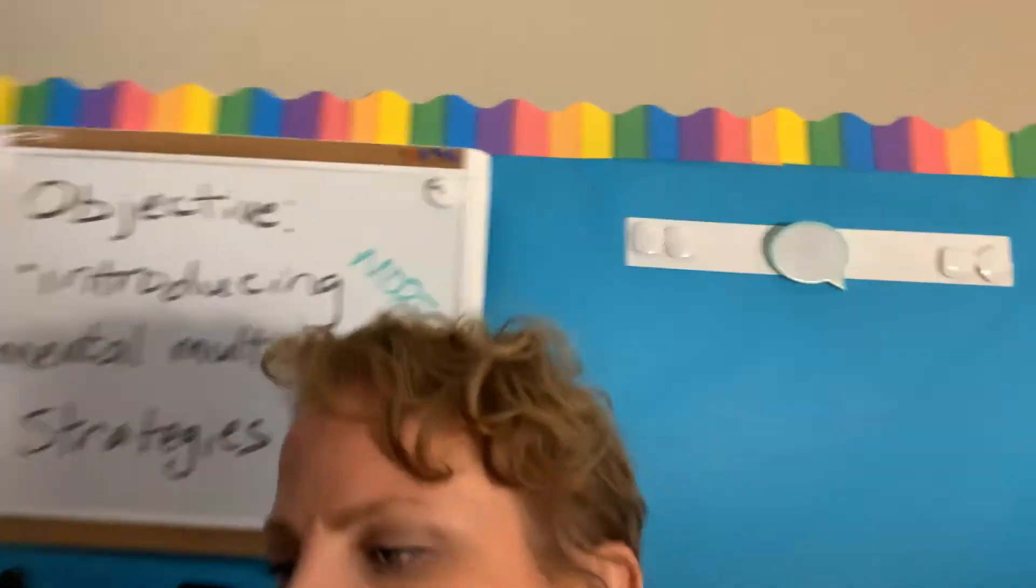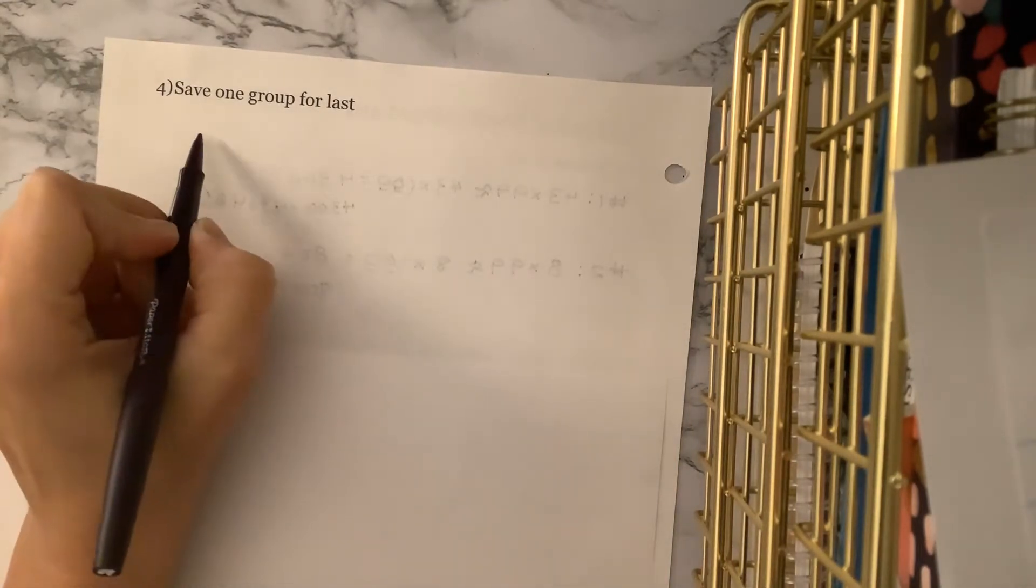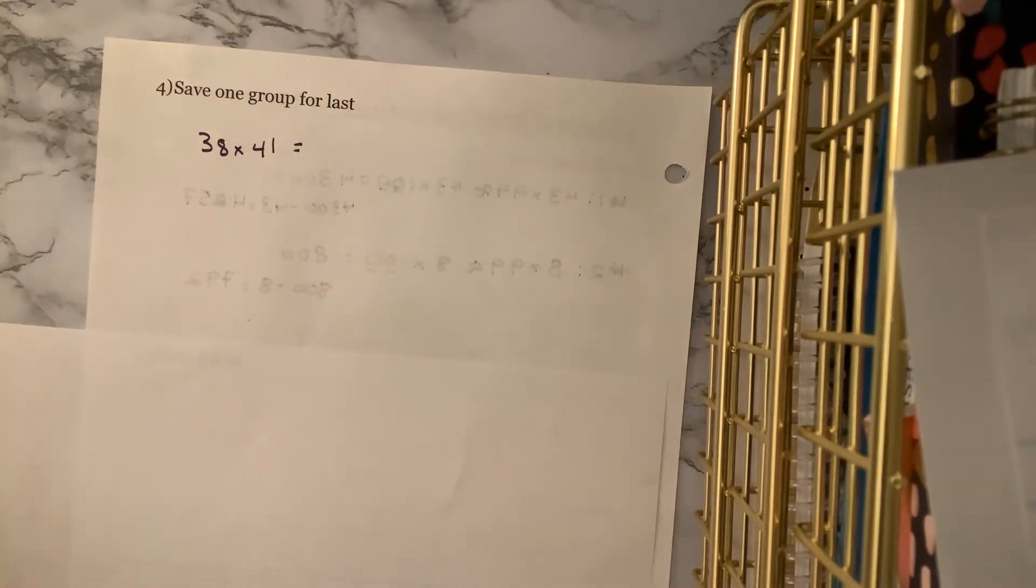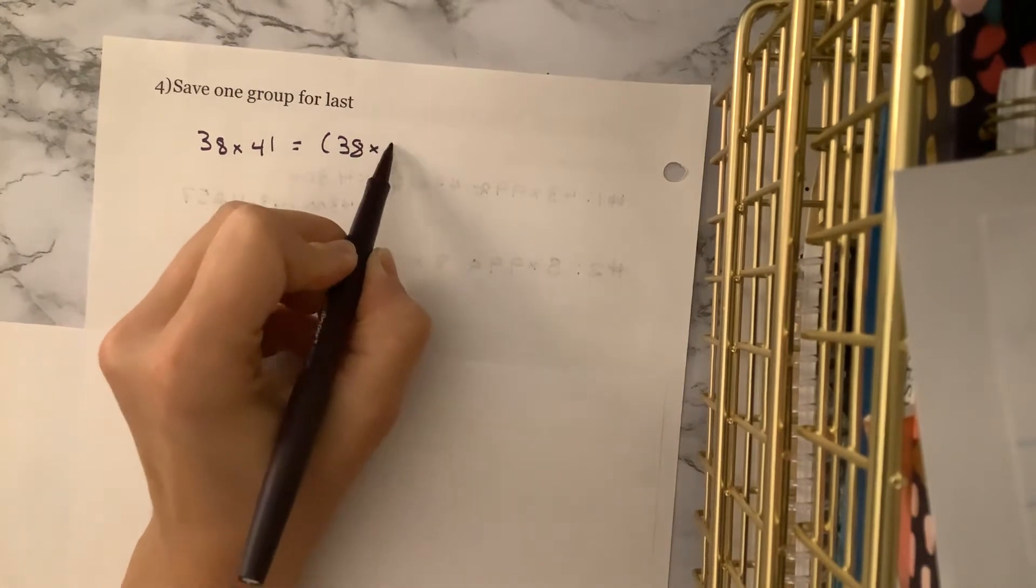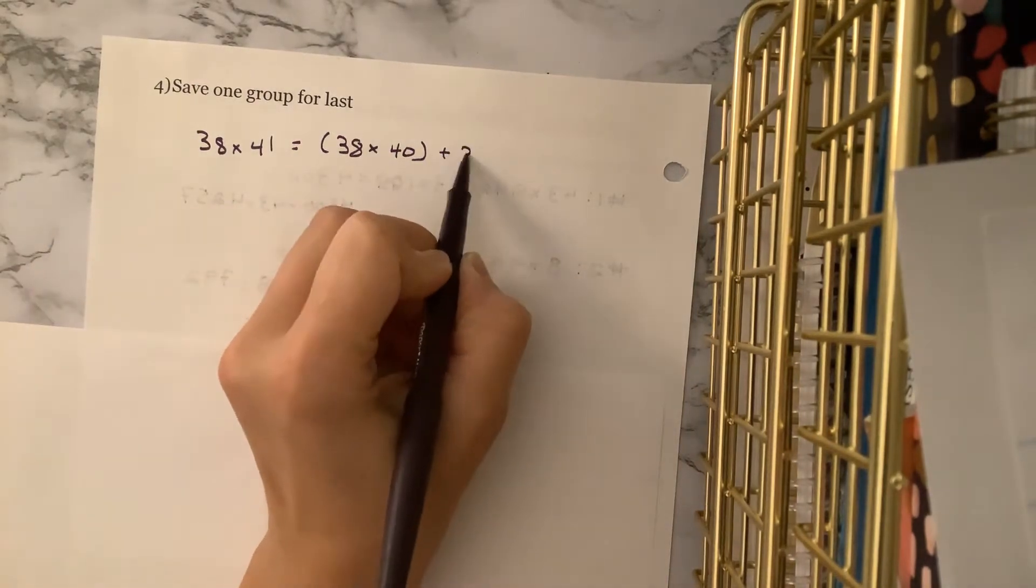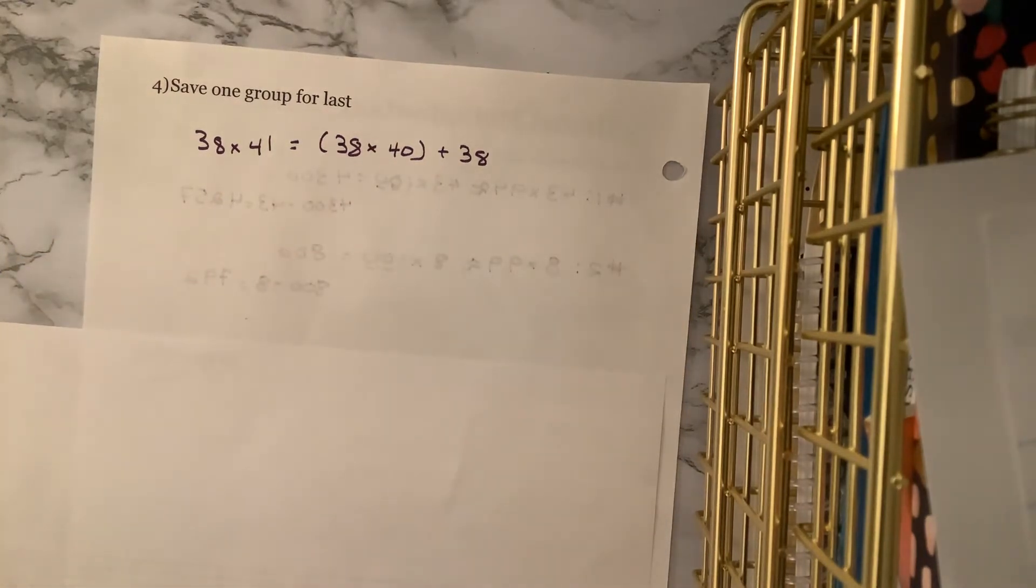So we're going to do two more strategies today. Actually, the last one is my favorite strategy. I love this one. It feels sort of like I'm on some kind of mystery hunt when I do the last one. So we'll do number four, and then we'll do number five. And those will be the five mental math strategies for multiplication that we're using. So strategy four is called save one group for last. So what does that mean? Let's say we're multiplying 38 times 41.